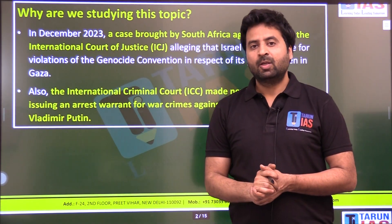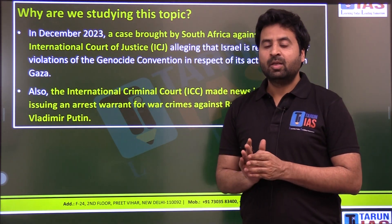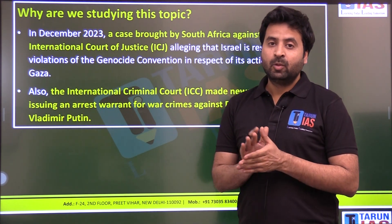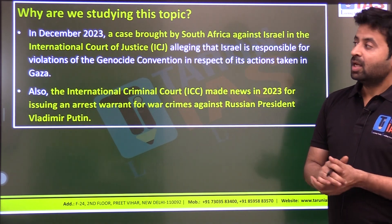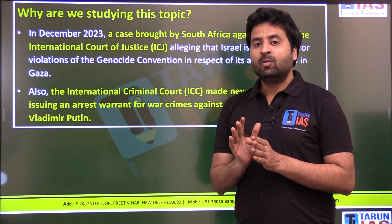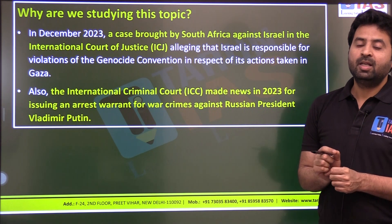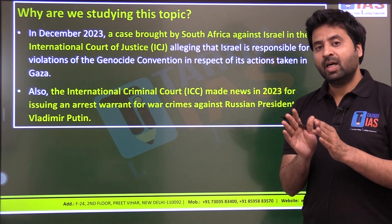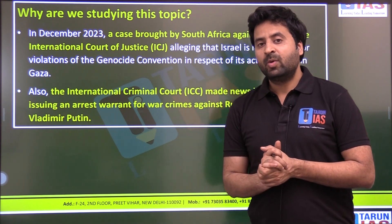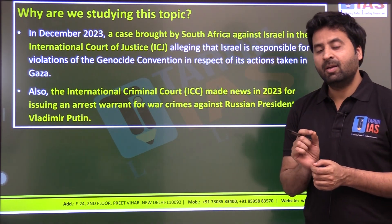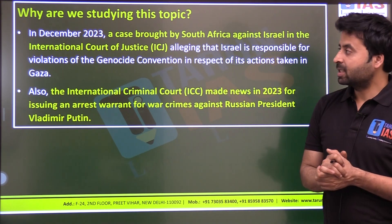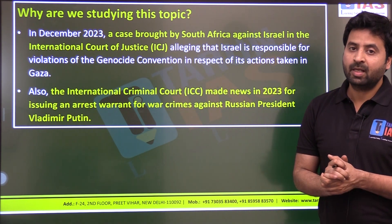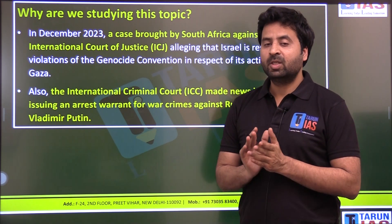So why are we discussing this particular topic? Recently, the International Criminal Court issued an arrest warrant against the President of Russia, Vladimir Putin, in the context of the Russia-Ukraine war. Russia is not a member of the International Criminal Court, and while ICC can issue arrest warrants, to actually arrest a person it needs the support and cooperation of member states.